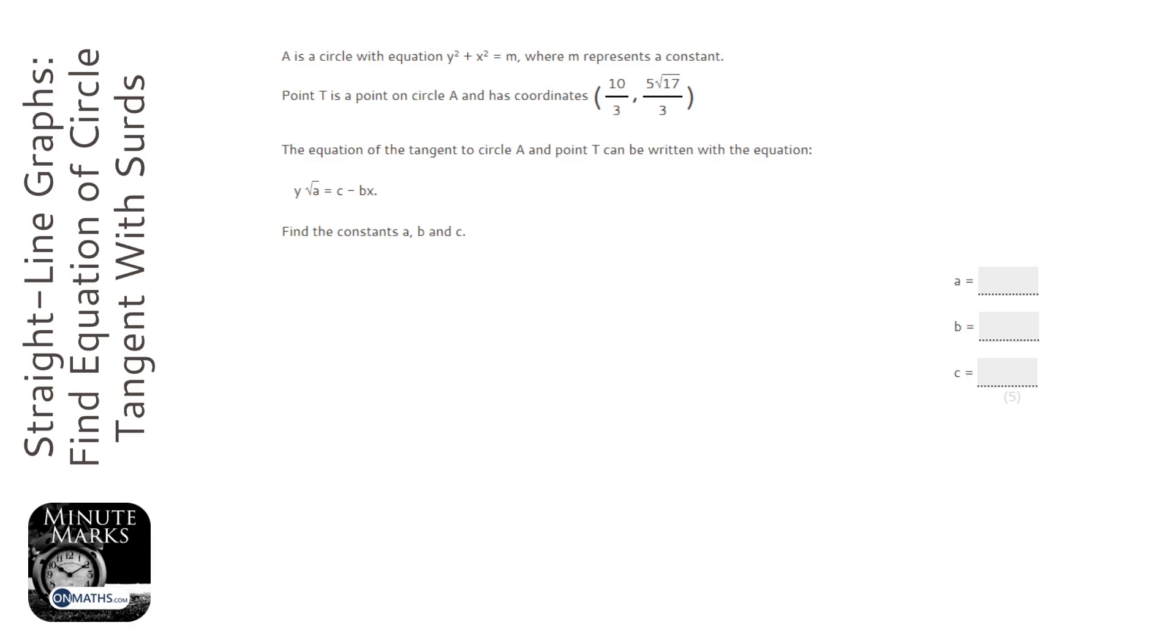The first thing to notice is we've got the equation of a circle. Now, important thing to highlight with this, and we'll do a little diagram up here. Because it's y squared plus x squared equals a number, we know the centre of the circle is going to be at 0, 0. So the circle looks something like this. I am not good at drawing circles, actually that's not too bad. And that will help us later on.